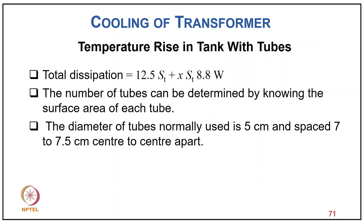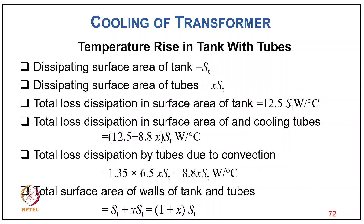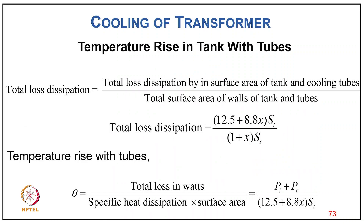The number of tubes is determined from the surface area of each tube, with tube diameter typically 5 cm and center-to-center spacing 7–7.5 cm. Total dissipating area of tank is ST, of tubes is X×ST. Total temperature rise: θ = (Pi + Pc) / [(12.5 + 8.8X) × ST]. Solving for X: 8.8×X×ST = (Pi + Pc)/θ − 12.5×ST, giving X×ST = (1/8.8) × [(Pi + Pc)/θ − 12.5×ST]. Total tube area = X×ST.